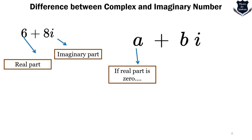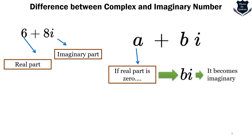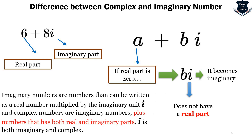If you take a complex number as a+bi, then a is the real part and b is the coefficient of the imaginary part. If you set a equal to 0, then you get 0+bi, which becomes purely imaginary — it has no real part.